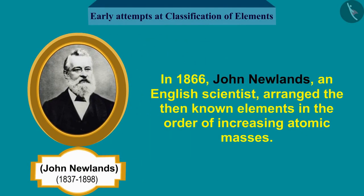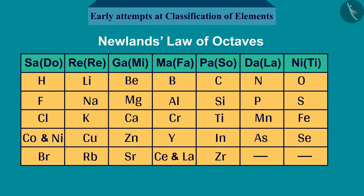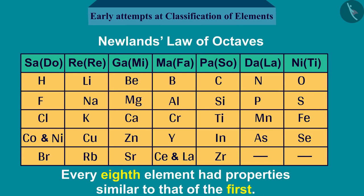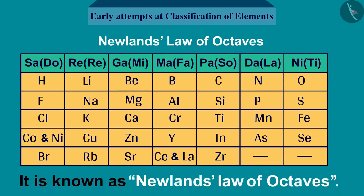In 1866, John Newlands, an English scientist, arranged the then-known elements in the order of increasing atomic masses. He started with the element having the lowest atomic mass, hydrogen, and ended at thorium, which was the 56th element. He found that every 8th element had properties similar to that of the 1st, and he compared this to the octaves found in music. Therefore, he called it the Law of Octaves — known as Newland's Law of Octaves.